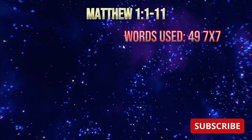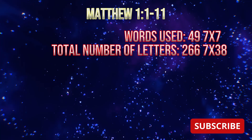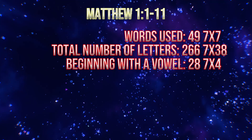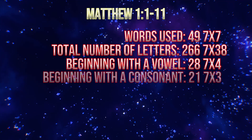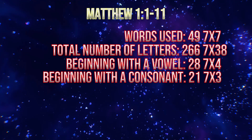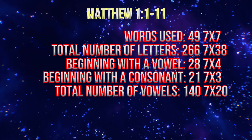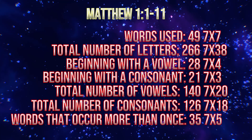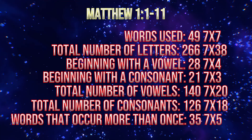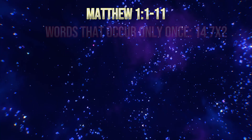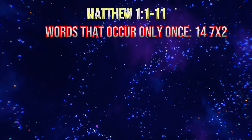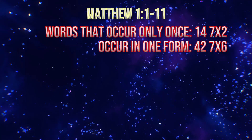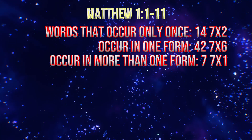The number of words used is 49. The total number of letters is 266. The number of words beginning with a vowel is 28. The number of words beginning with a consonant is 21. The total number of vowels is 140. The total number of consonants is 126. Words that occur more than once: 35. Words that occur only once: 14. Words that occur in one form: 42. Words that occur in more than one form: 7.